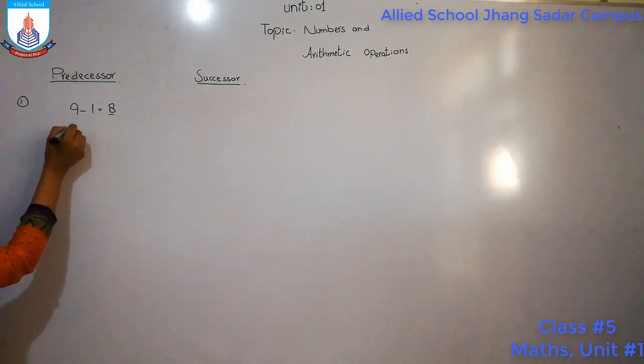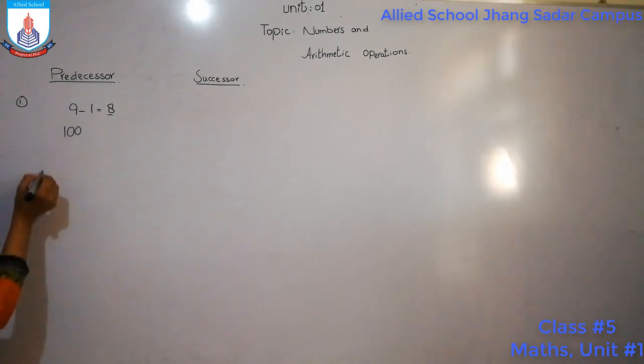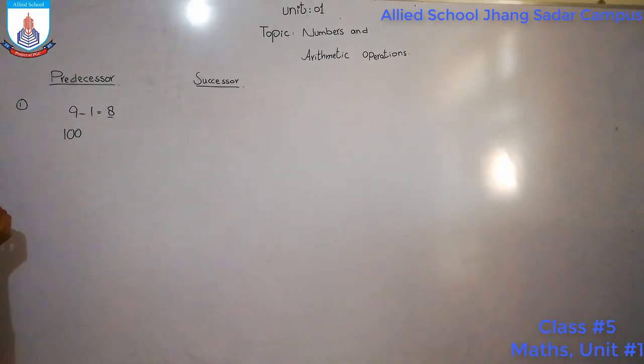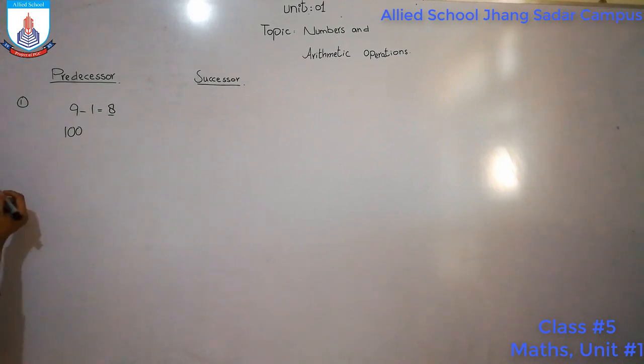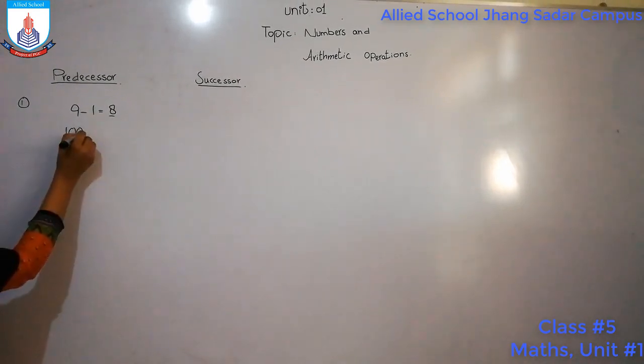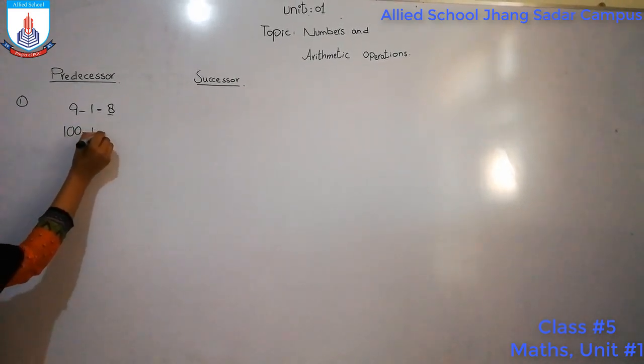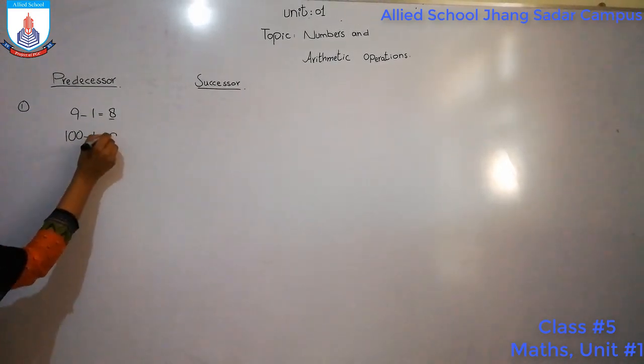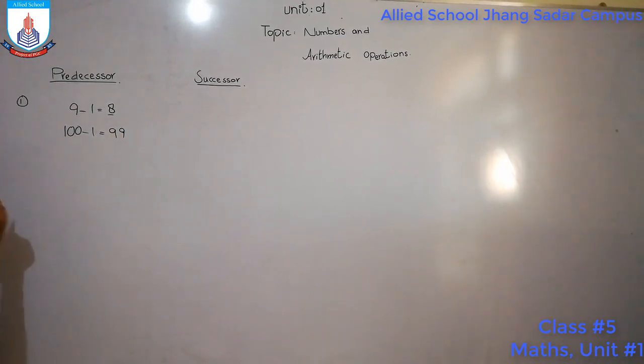Similarly, if we have 100 and we are going to find its predecessor, then we have to subtract 1, and the answer will be 99.